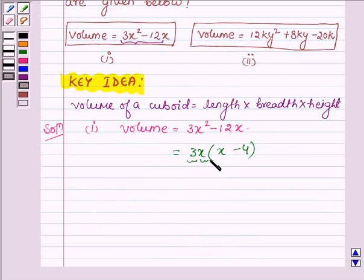Now this is the product of three factors. So one will be the length, another will be the breadth, and the last one will be the height. So the possible dimensions are